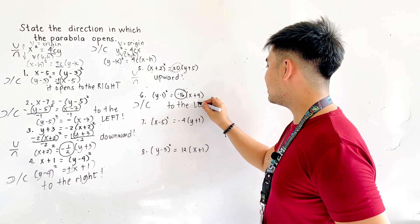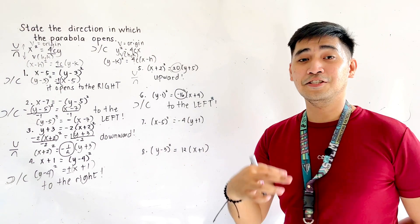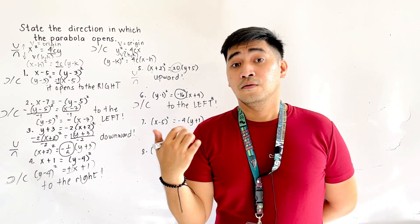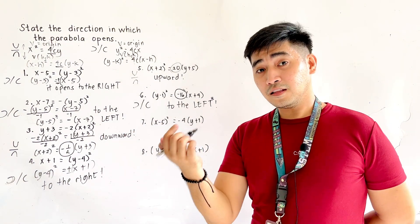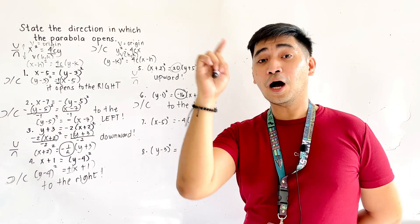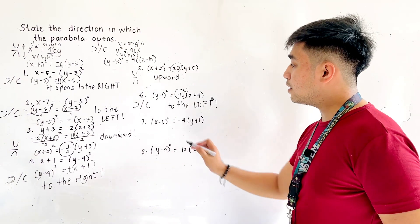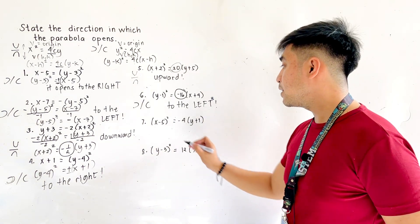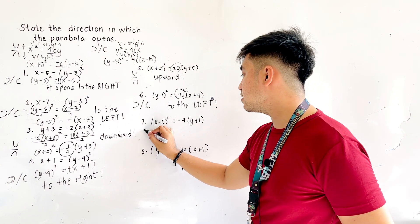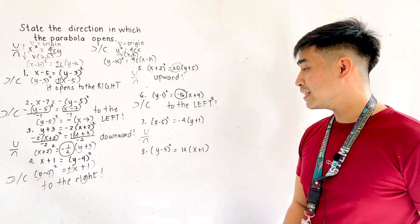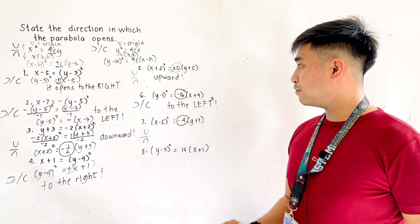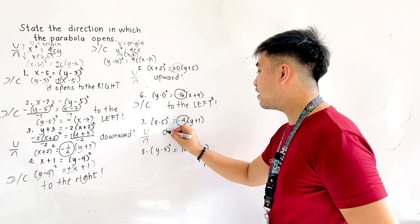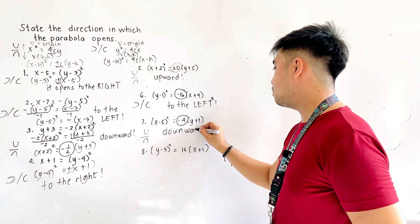That is how we identify the opening easily — just arrange into standard form and look at the right side. For number 7, we are given x minus 5 quantity squared is equal to negative 4 times the quantity y plus 1. Since we have x squared and the right side is negative 4, the parabola is opening downward.